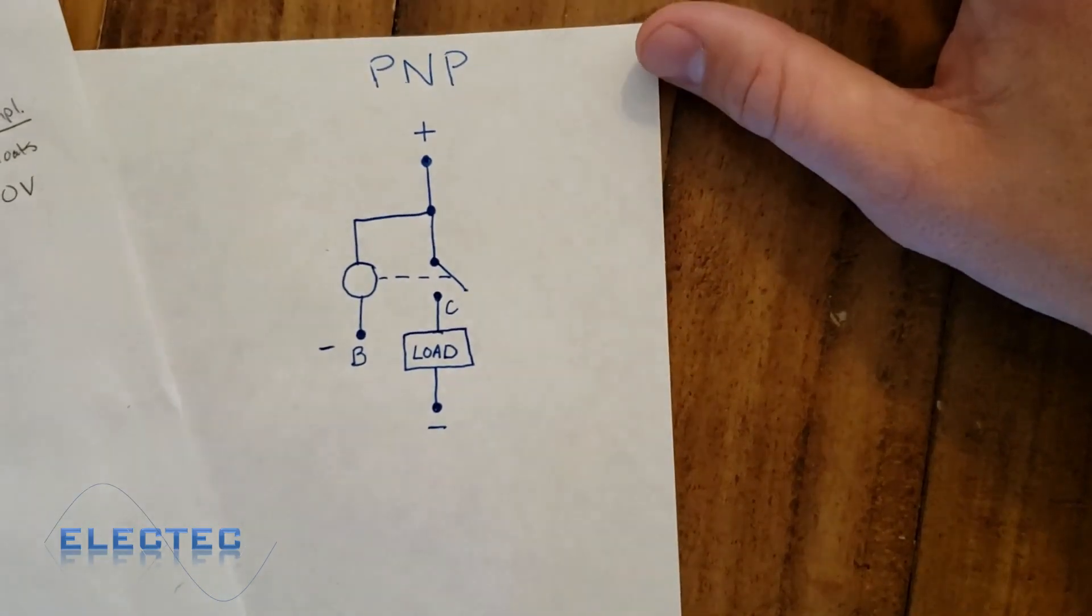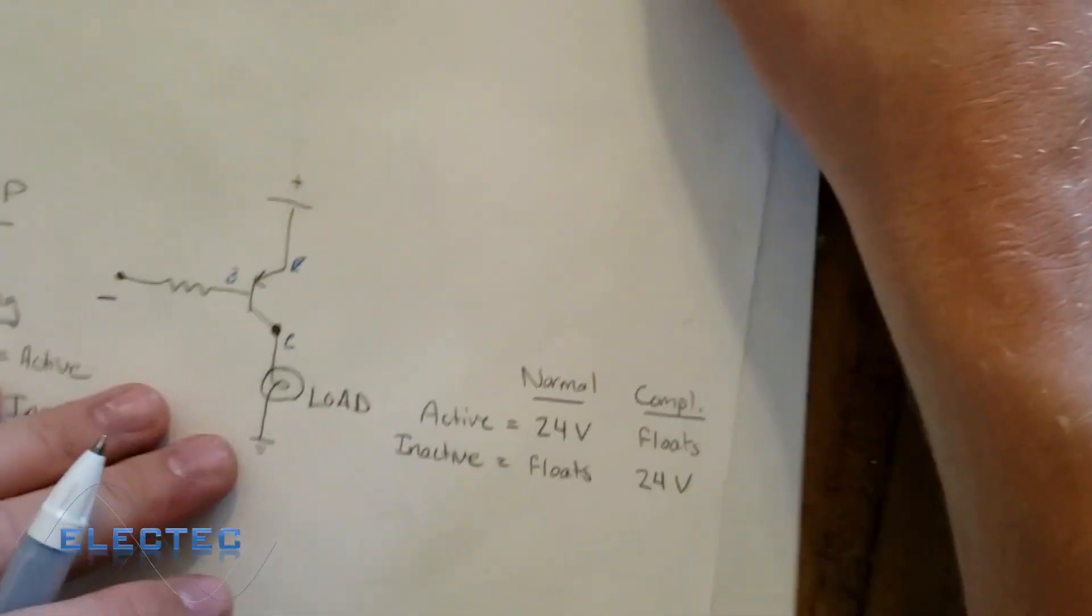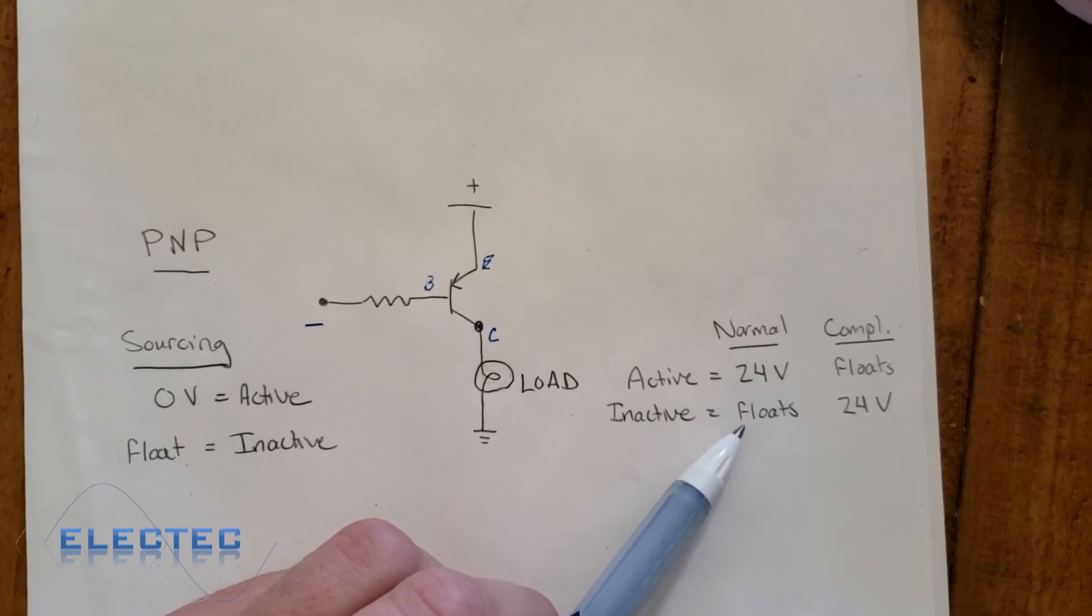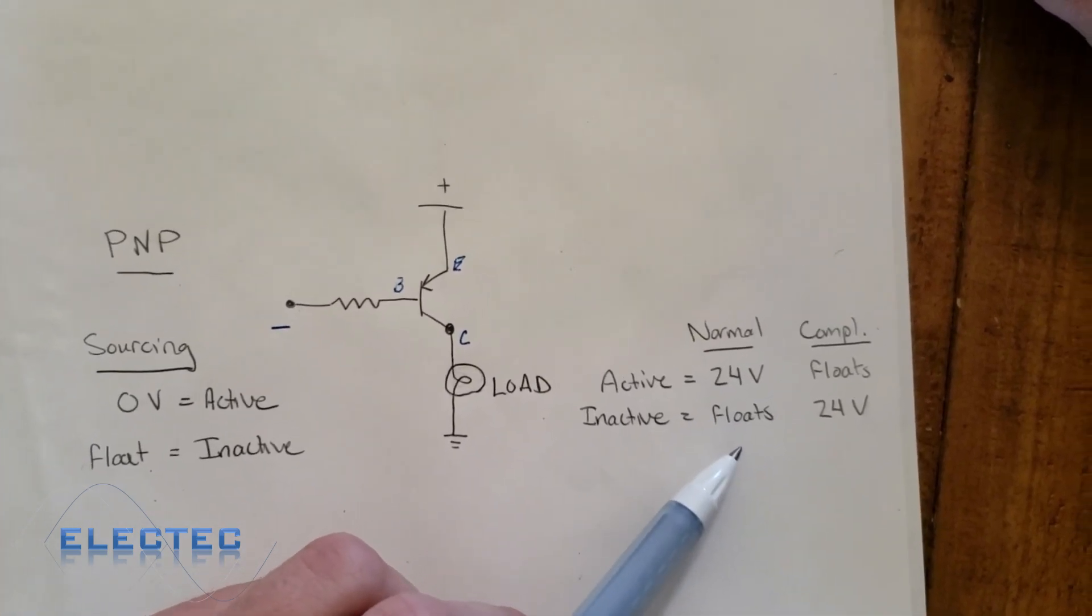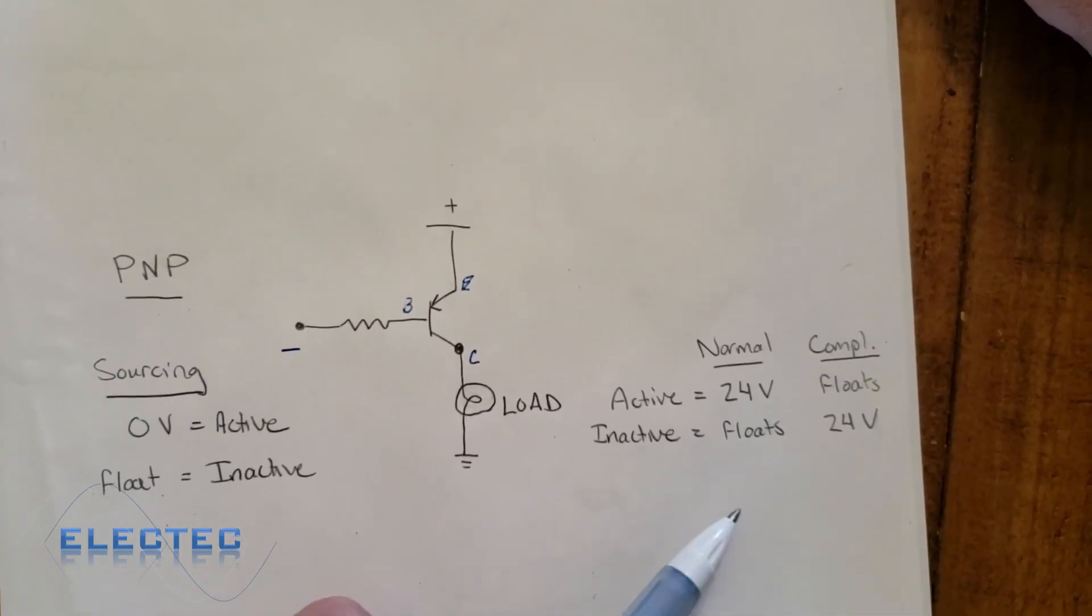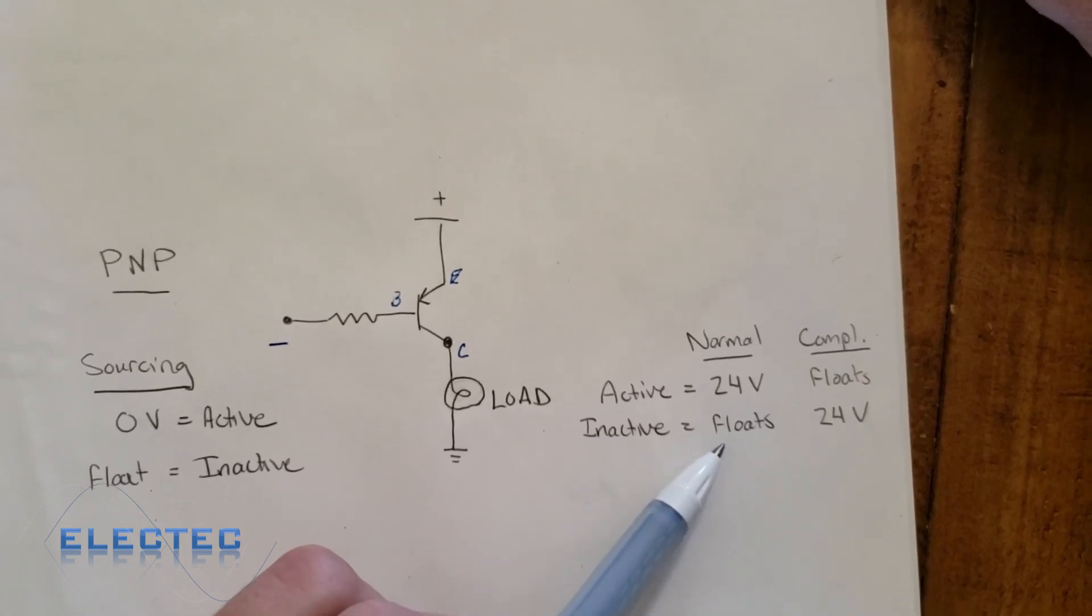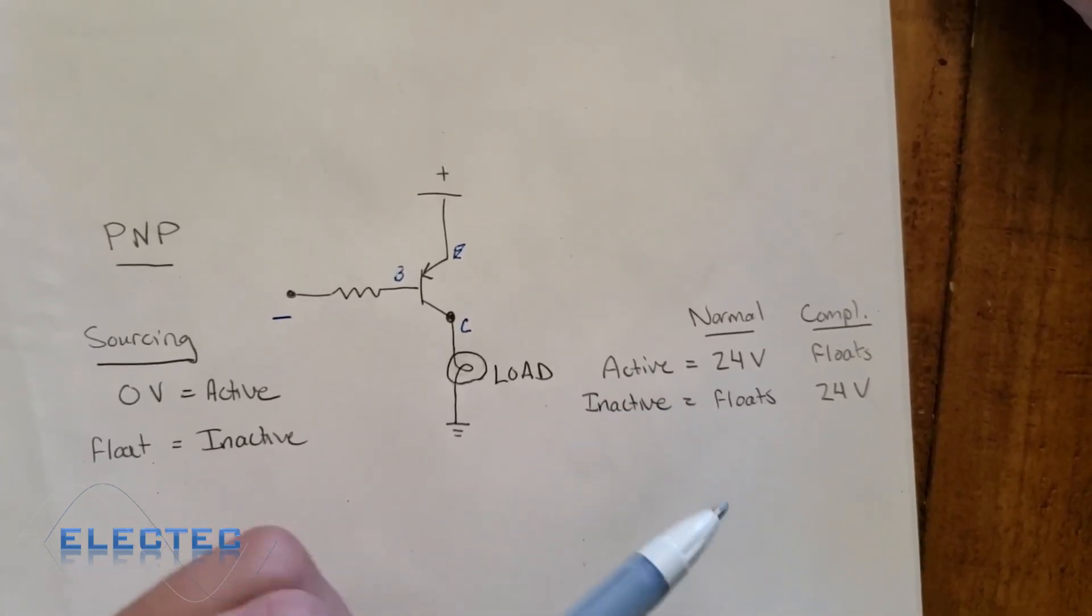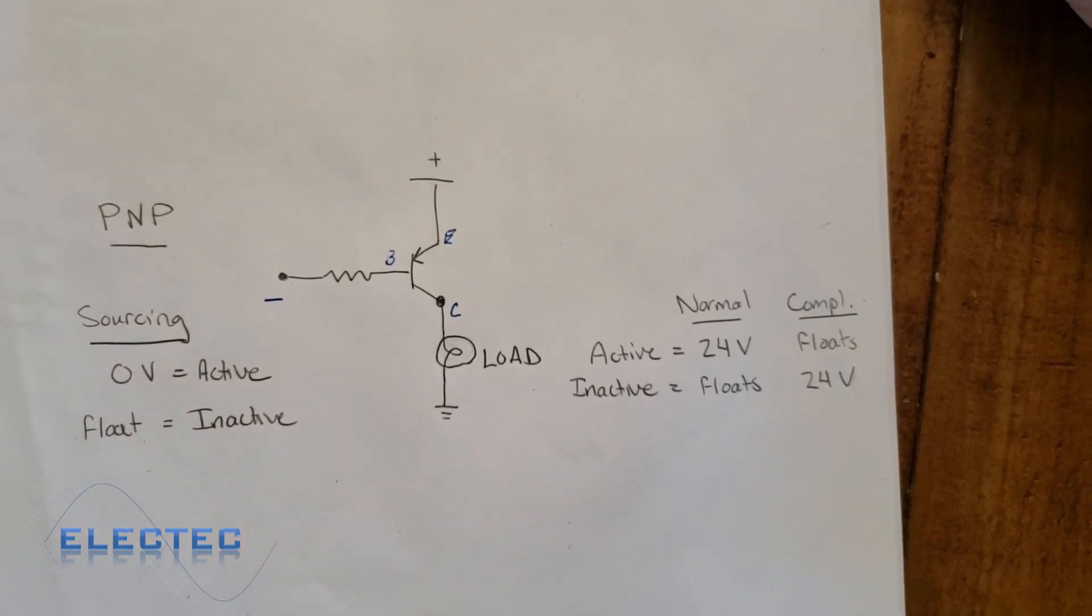You always have to remember, an important part about this, and I want to reiterate this as a last point, is that when the transistor is inactive, it doesn't turn it to zero volts. A lot of people get hung up on that. It floats. So if you need zero volts, you have to turn to an NPN sensor or transistor.